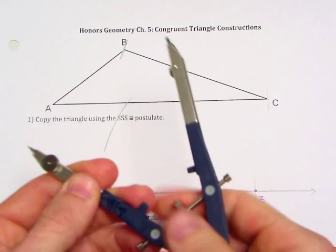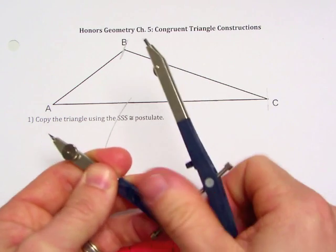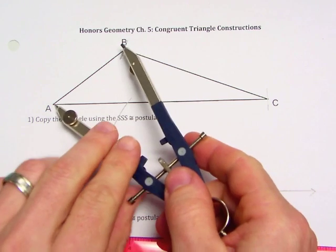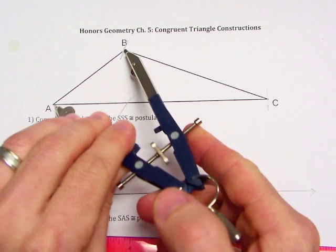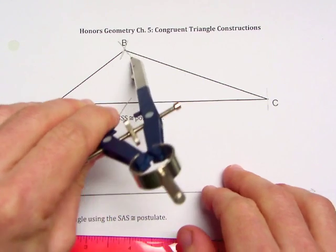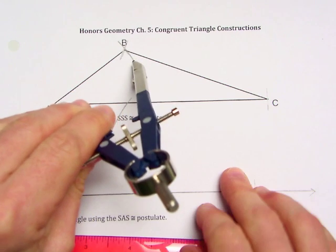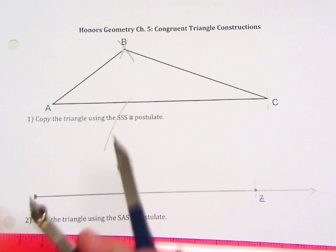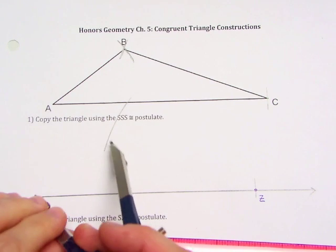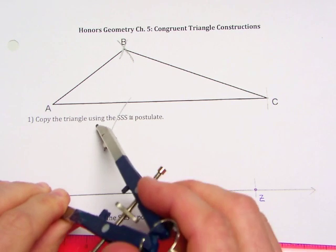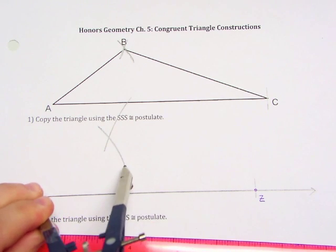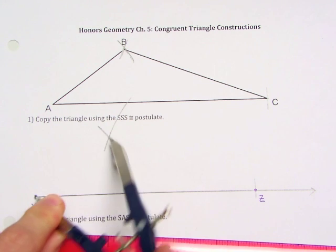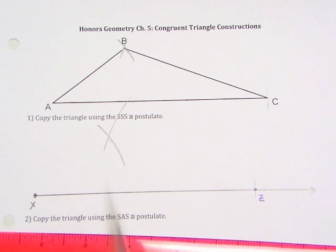Then we also copy segment AB here. Okay, so now we have the length of AB. We move to the corresponding point X and draw an arc. We know that the congruent segment is going to be somewhere on this arc.